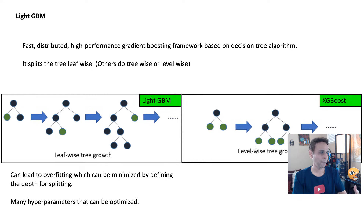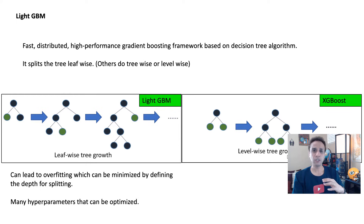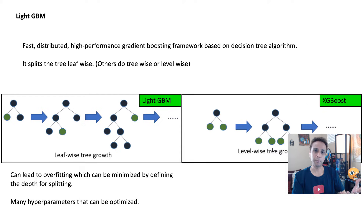Just like any other tree algorithm — and especially because LightGBM grows leaf-wise — it can lead to overfitting. You can control this by defining the depth of splitting (how deep you go when splitting) and the number of leaves. Just like XGBoost, there are various hyperparameters you can define. The defaults usually work most of the time, but you can get much better performance if you actually tune them.